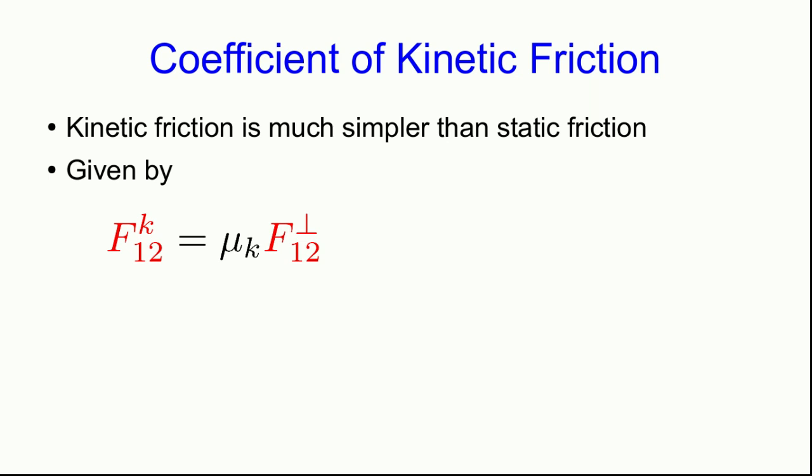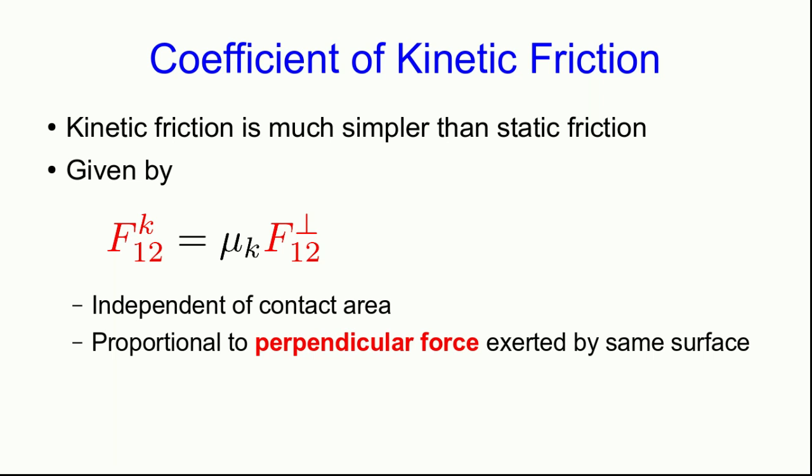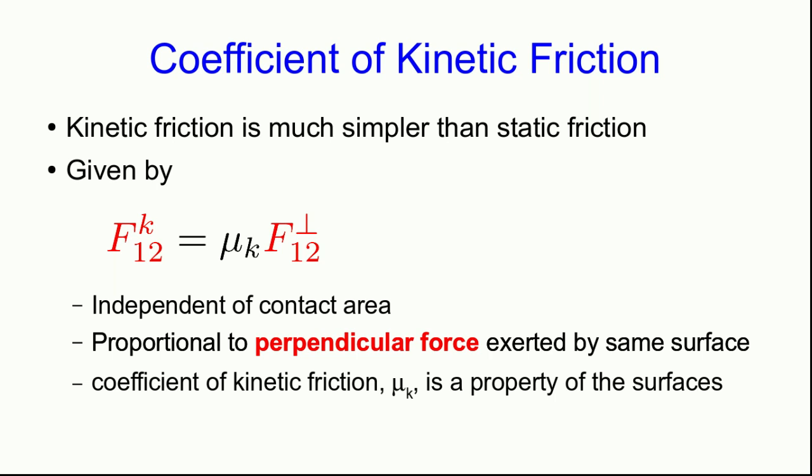It is actually given by mu k times the perpendicular force. And like the static friction, this is independent of contact area. There's that same proportionality to the perpendicular force. And the coefficient of kinetic friction is again a property of the surfaces. And note, we already know that when sliding starts, the kinetic friction that replaces the maximum static friction is smaller than the maximum static friction was. And that, in general, tells you that the kinetic friction coefficient is smaller than the static friction coefficient between the same surfaces.